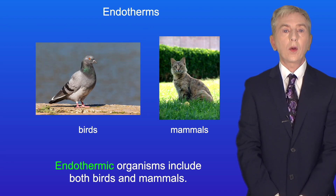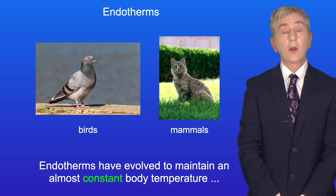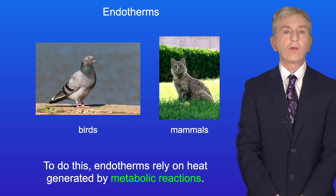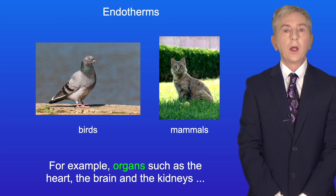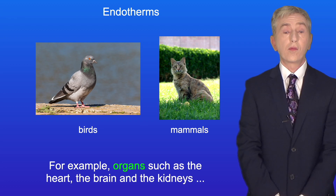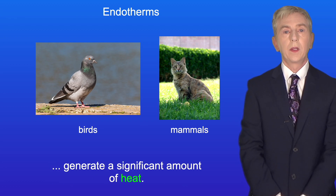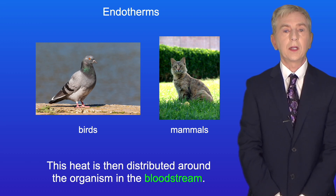Endothermic organisms include both birds and mammals. Endotherms have evolved to maintain an almost constant body temperature, regardless of the temperature of the environment. To do this, endotherms rely on heat generated by metabolic reactions. For example, organs such as the heart, the brain, and the kidneys generate a significant amount of heat. This heat is then distributed around the organism in the bloodstream.